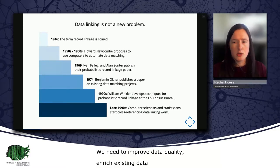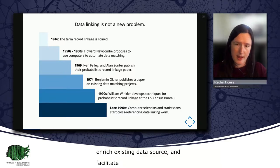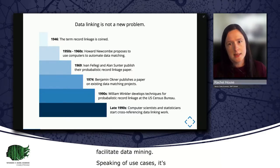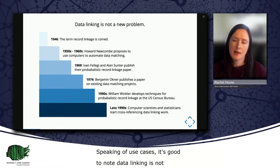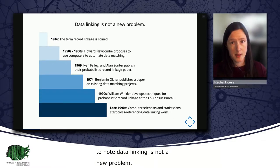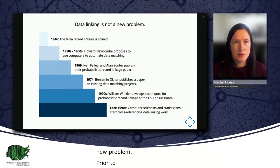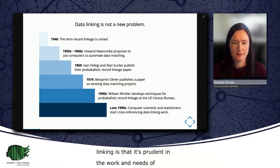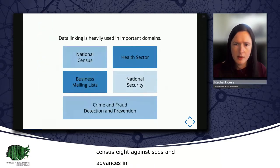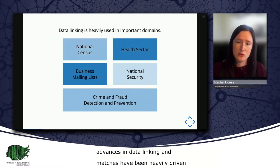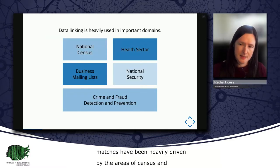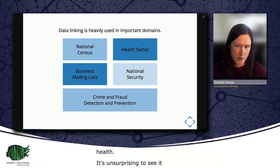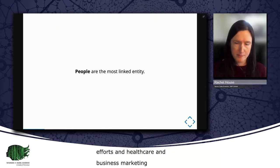And speaking of use cases, it's also good to note that data linking is not, in fact, a new problem. Even prior to computers, statisticians and public health researchers have been interested in identifying records from different databases that correspond to the same entity. One interesting thing about data linking is that it's rooted in the work and needs of national census agencies, and that advances in data linking and data matching have been heavily driven by the areas of census and health. It's therefore unsurprising to see data linking used heavily in domains that feature people, like government census efforts, healthcare, business marketing, national security, and crime and fraud detection and prevention.